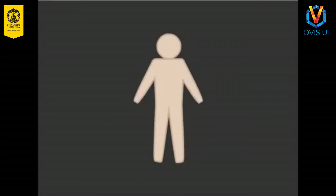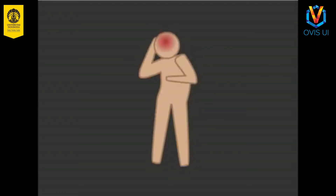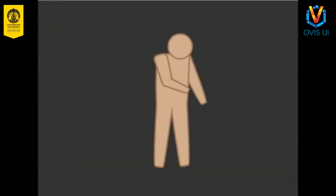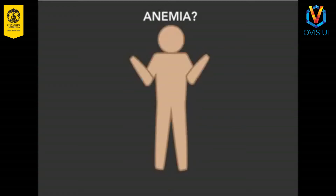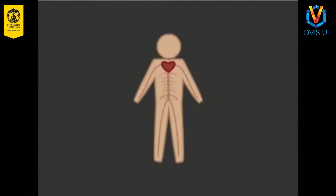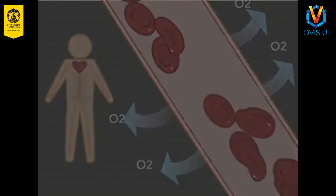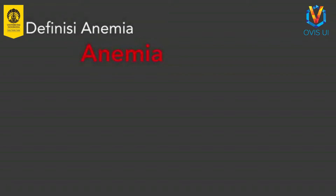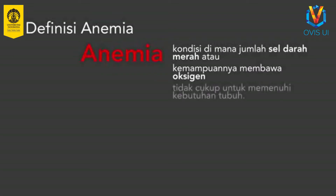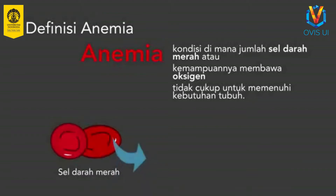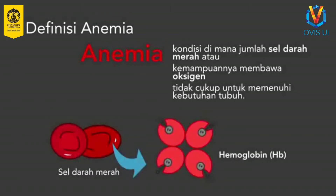Apakah Anda sering terlihat pucat, mengalami sakit kepala, jantung terasa berdebar-debar, dan mudah lelah? Bisa jadi Anda mengalami anemia. Jantung manusia memompa darah ke seluruh tubuh. Aliran darah membawa sel darah merah yang melepaskan oksigen di jaringan. Anemia adalah kondisi di mana sel darah merah atau kemampuannya membawa oksigen tidak cukup untuk memenuhi kebutuhan tubuh. Sel darah merah mengandung hemoglobin, yaitu suatu struktur yang mengikat oksigen. Kadar hemoglobin menentukan kemampuan sel darah merah untuk mengangkut oksigen.